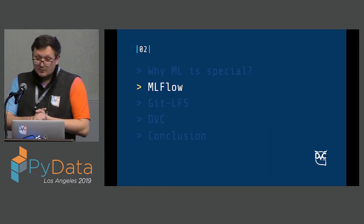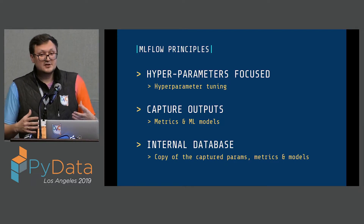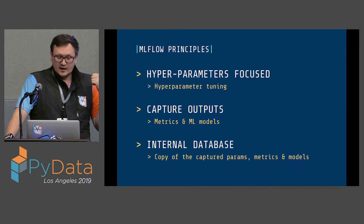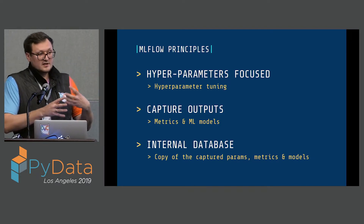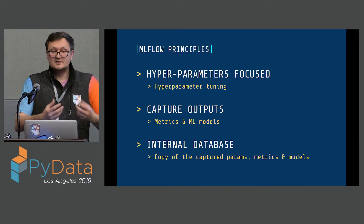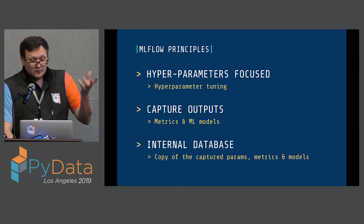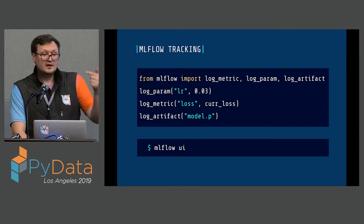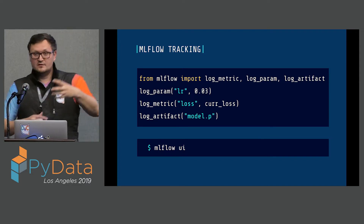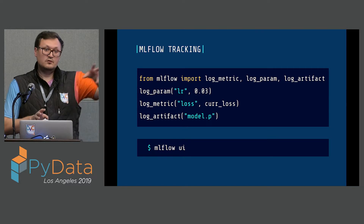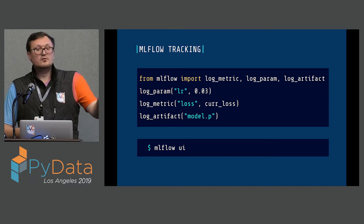MLflow is the first tool. It can help you in the hyperparameter tuning stage — it was designed specifically for this stage. It helps you track your hyperparameters, metrics, and ML models. MLflow puts all this information into a kind of database, which can be on your local machine or a centralized one. To use MLflow, you import the library and annotate your code with specific commands: this is my hyperparameter, this is my metric, these are my artifacts — and all this information goes to the database at training time.